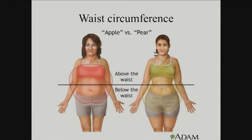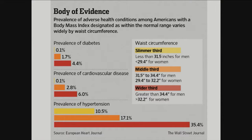One of them is waist circumference. It's historically known that pear fat — fat at the hips and the buttocks — is actually better for you than apple fat, which is fat around the core. Medical studies have shown that if you have a lower waist circumference, you have a lower prevalence of a lot of health indicators, a lot of medical problems.